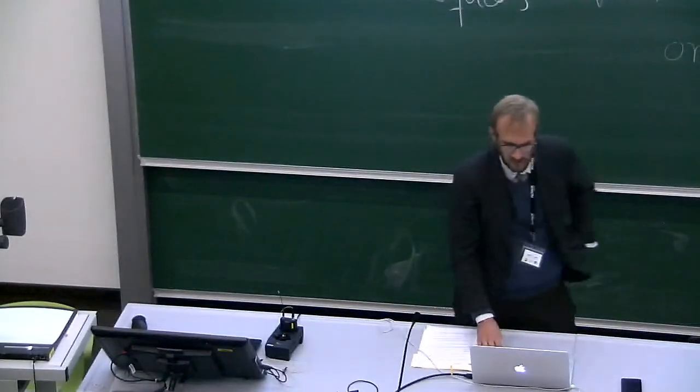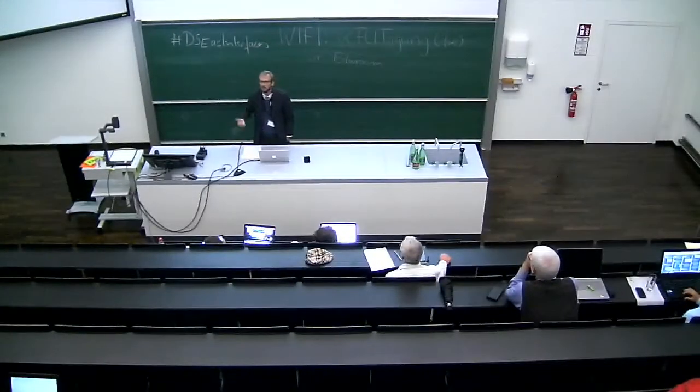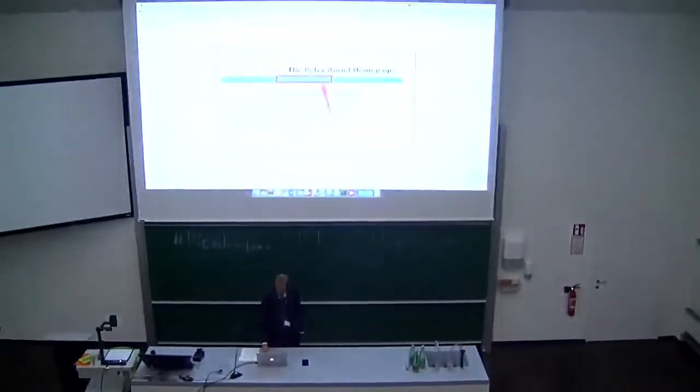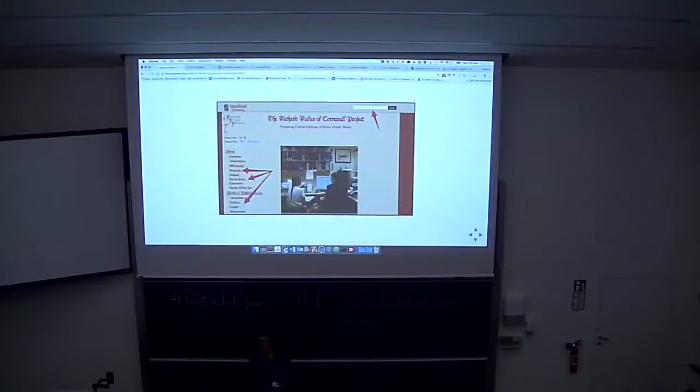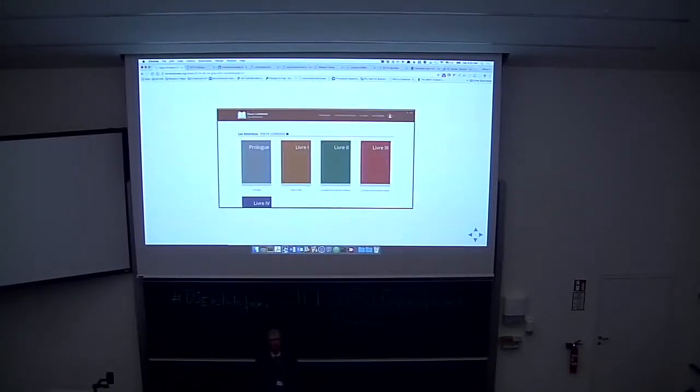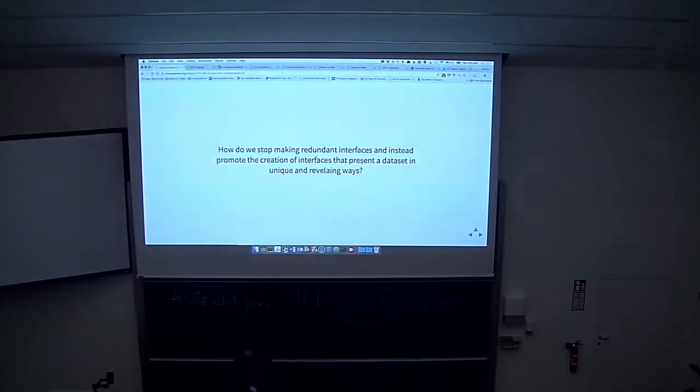And just very quickly, I just took some screenshots of some typical attempts to display an edition of a commentary on the sentences. And each one you see, text, bibliography, biography, search box, text, bibliography, the patterns are repeated again and again and again. So my question is, how can we stop making redundant interfaces and instead promote the creation of interfaces that present a dataset in unique and revealing ways?